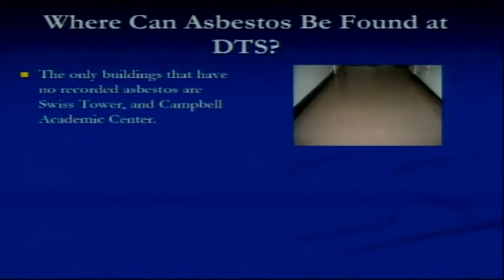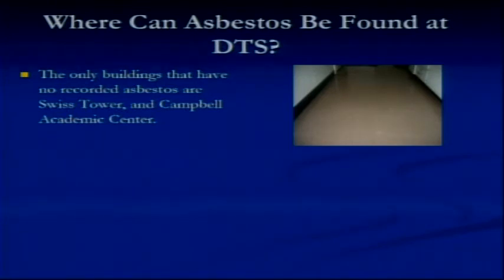Where can asbestos be found at DTS? The only buildings that have no recorded asbestos are Swiss Tower and Campbell Academic Center. It doesn't mean that there's not any in there, but that's the only place that it's recorded that it does not have it. Any time we renovate in any of our buildings, whether it's been deemed as clean or not, we have to get an asbestos inspection before we do any renovations. They go through and test and retest things to make sure something hasn't been changed out and brought back in. We're constantly doing that on a regular basis to make sure the campus and personnel are protected.